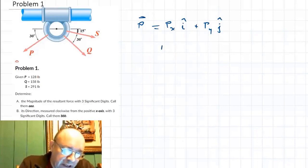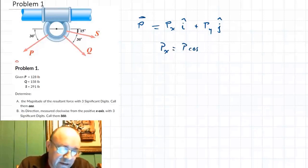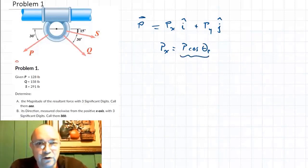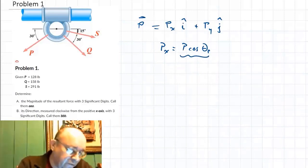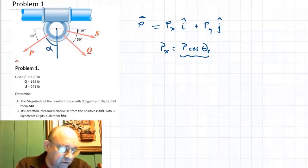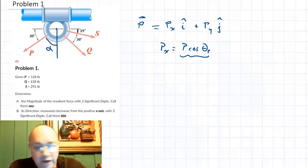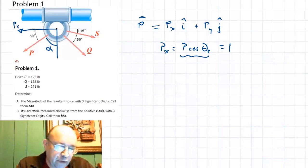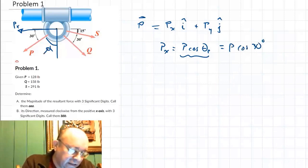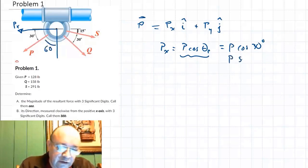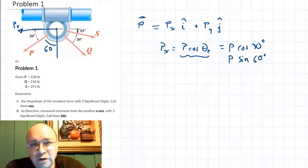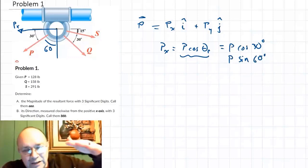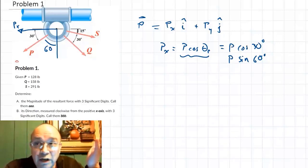You're probably used to PX equal to P cosine theta. This is true if you have the angle that the force makes with respect to the X axis, but that's not always the case. For example, if you have this angle — say the angle from the Y axis — then the component in the X direction will be P times the sine of the angle. So PX will be P cosine of 30 degrees. But if you know that the complementary angle is 60 degrees, you can also say PX equals P sine 60 degrees. You might have the complement of that angle, so instead of using cosine you will use sine.